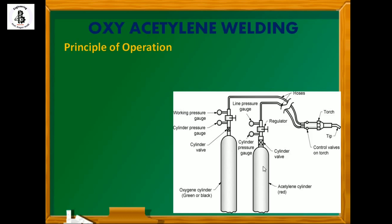The acetylene cylinder similarly has two pressure gauges: one indicating as the cylinder pressure gauge and another indicating as the line pressure gauge.